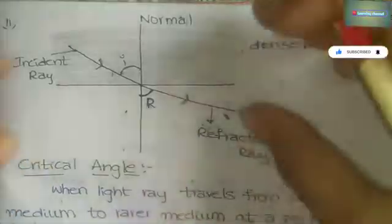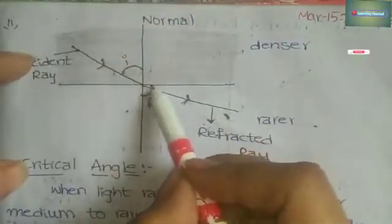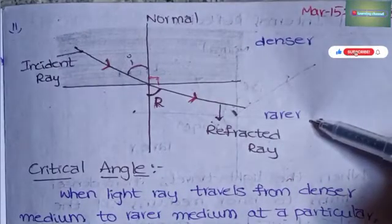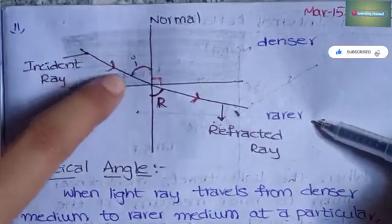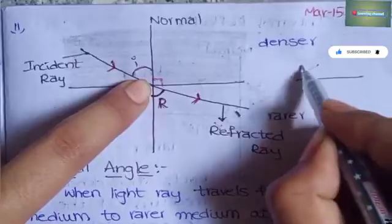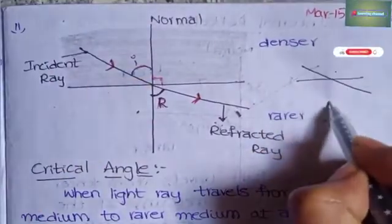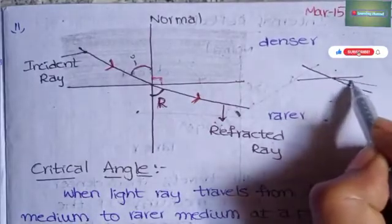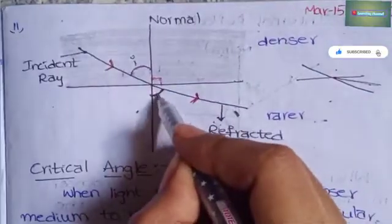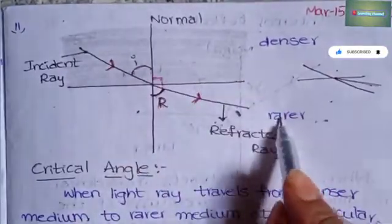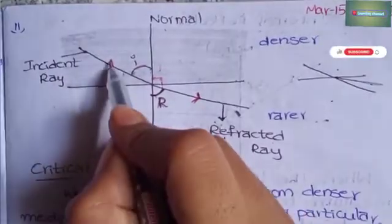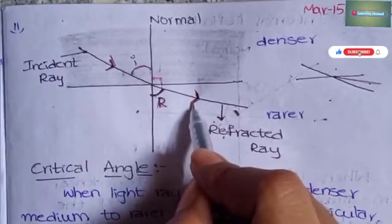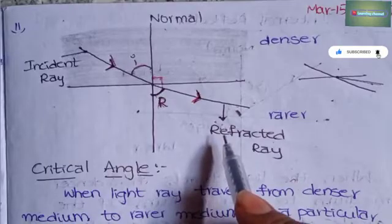This is the ray diagram. This is the normal, perpendicular to the plane. This is the angle of refraction. Denser medium, rarer medium, incident ray, refracted ray — arrows should be drawn correctly. The arrow marks are compulsory; if arrows are wrong, marks will be cut.